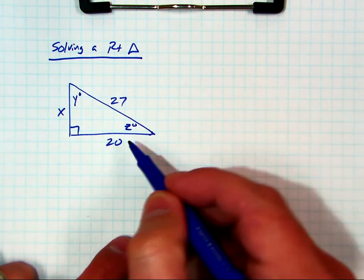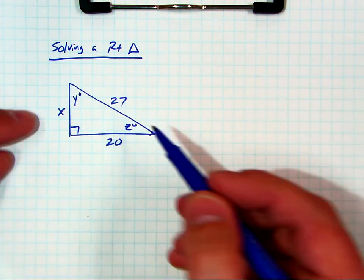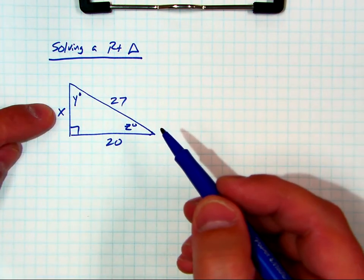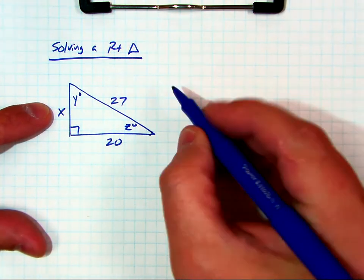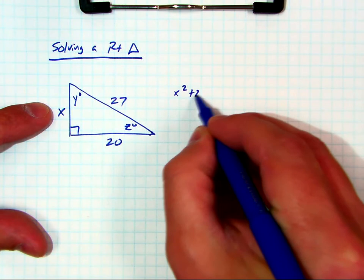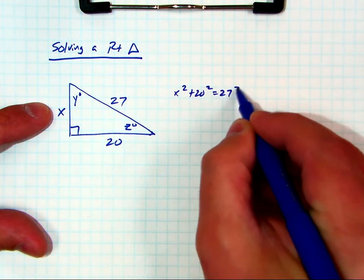So let's see. We know 20 and 27 compared to x. How can we figure out what x is? What's the theorem? That's right. Pythagorean: x squared plus 20 squared equals 27 squared.